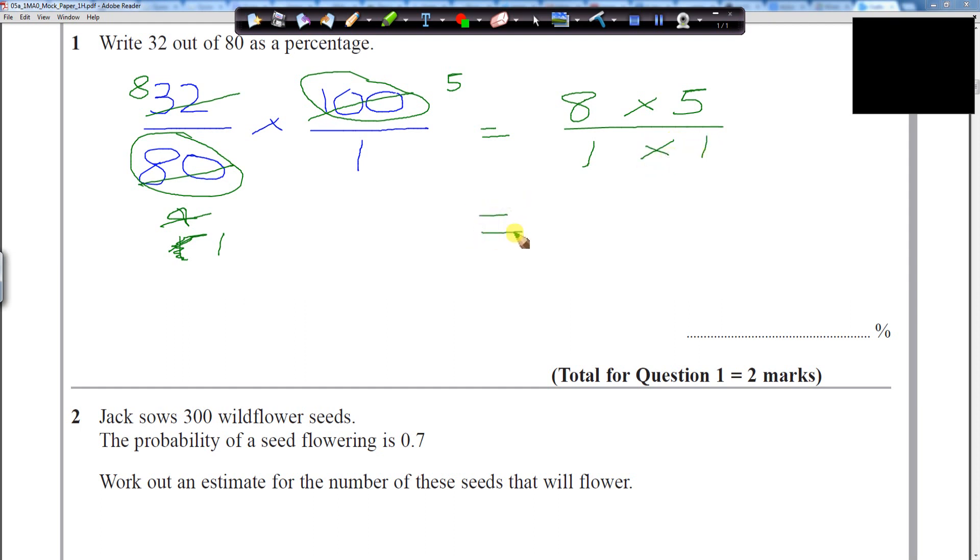Okay, hopefully this won't be too hard of a calculation for you guys to finish off. 8 times by 5 will give us 40, and 1 times by 1 will give us 1. And 40 divided by 1 is a nice 40%.